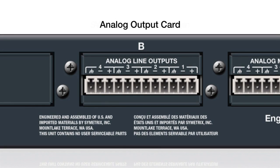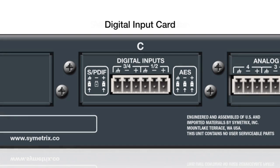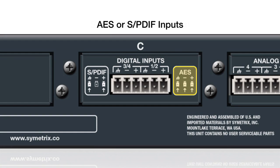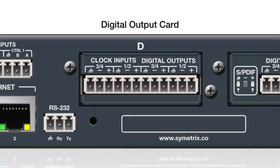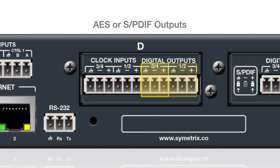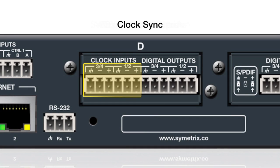The analog output card provides four channels of balanced line level output. The digital input card has four channels of AES or SPDIF with sample rate conversion. The digital output card has four channels of AES or SPDIF with clock sync option.